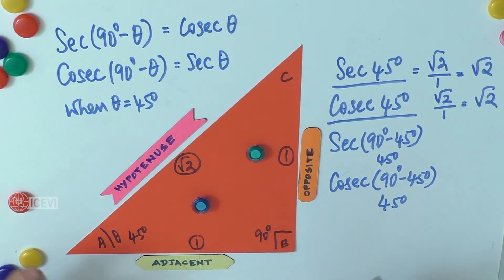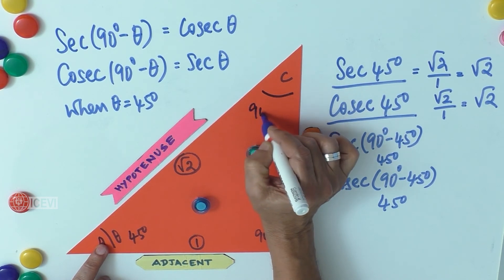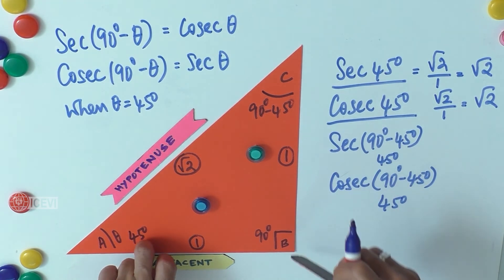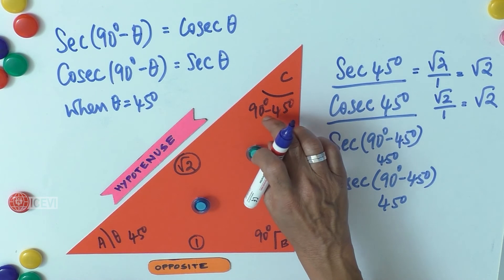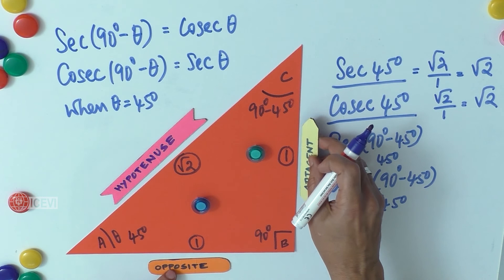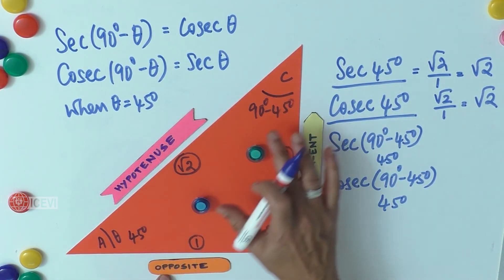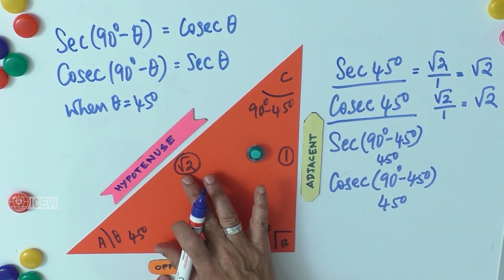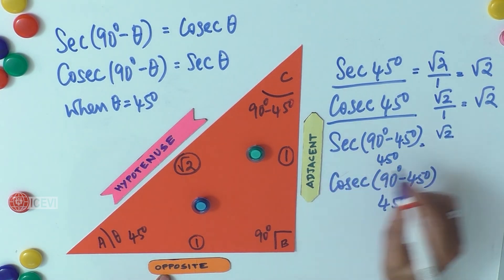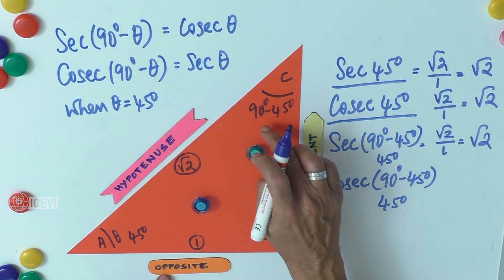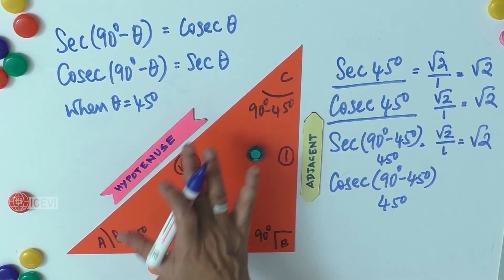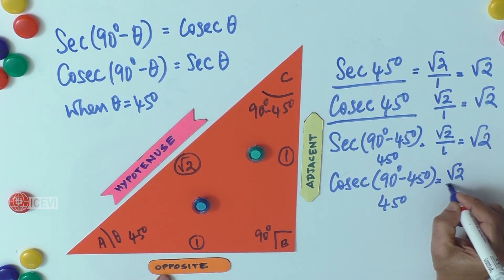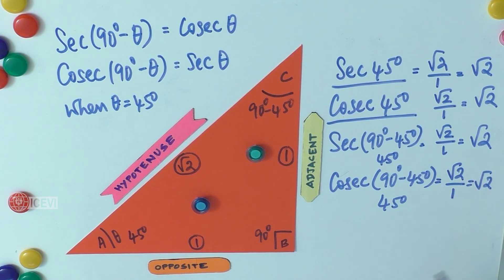If we take C as the reference angle, then C becomes 90° - 45° = 90° - θ. For practical purposes, when we take C as the reference angle, AB becomes the opposite and BC becomes the adjacent. So sec(90° - 45°) is hypotenuse divided by adjacent, which is √2 divided by 1, giving √2. And csc(90° - 45°) is hypotenuse divided by opposite, which is √2 divided by 1, also giving √2.